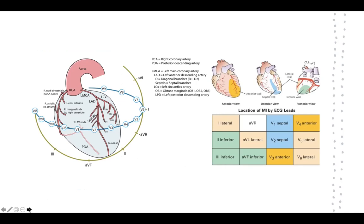When we have an ST elevation, we must look at where in the ECG it is located and which leads are involved. The ECG describes electrical activity from various angles, so if we note ST elevation indicating myocardial ischemia in a particular set of leads, we can pinpoint the area of the heart affected. For example, V4, V5, and V6 look at different angles of the heart.